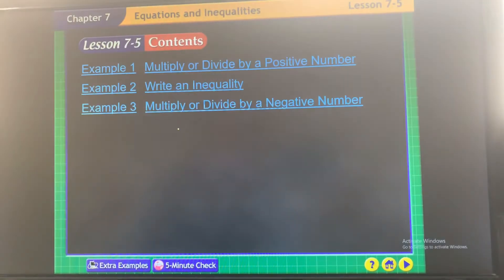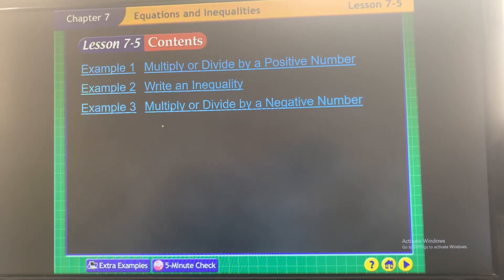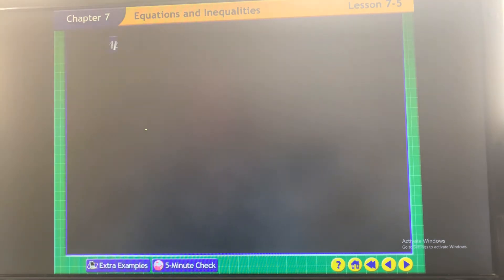Alright, so lesson 7.5 has a little bit of a twist. You're undoing multiplication and division inequalities, but you need to be very careful when you're undoing with a negative. Let's see, this one's just a basic one. It's multiplication, undo with division.